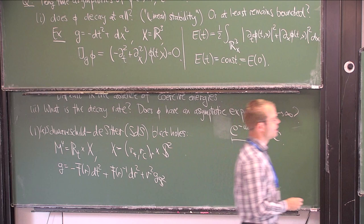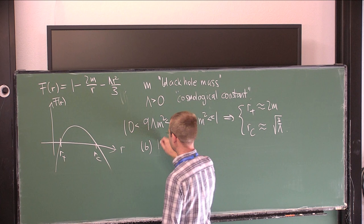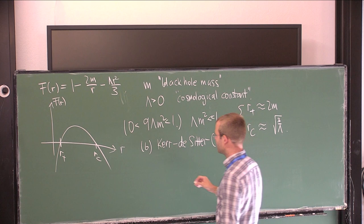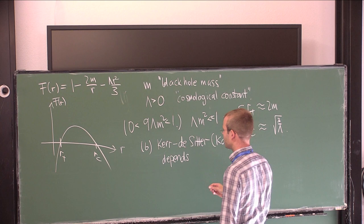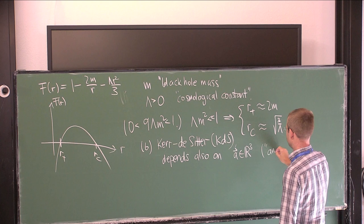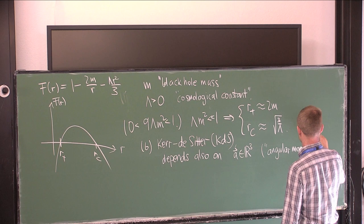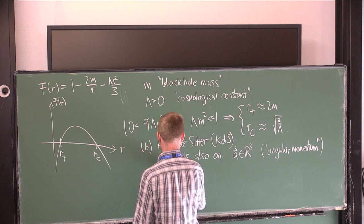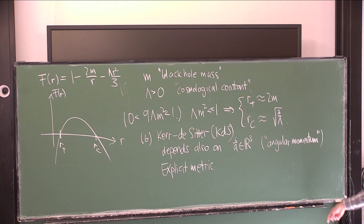That's the Schwarzschild-de Sitter black hole. I want to pay lip service to a generalization called the Kerr-de Sitter metric. It's again an explicit metric depending on the mass, the fixed cosmological constant, and also a parameter A — upgraded to a vector in R³ — which plays the role of angular momentum. It's a perfectly explicit metric, but just a bit more complicated.